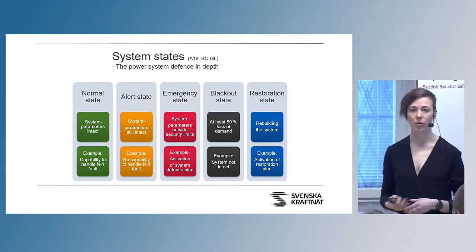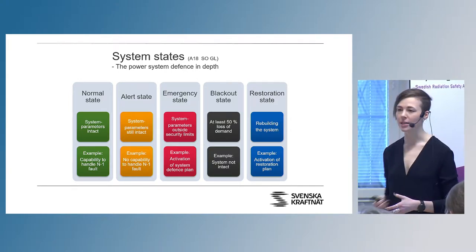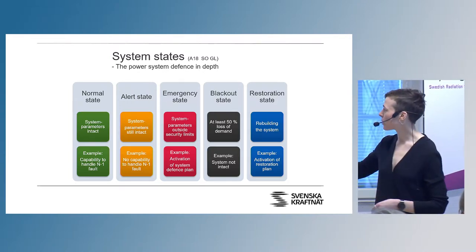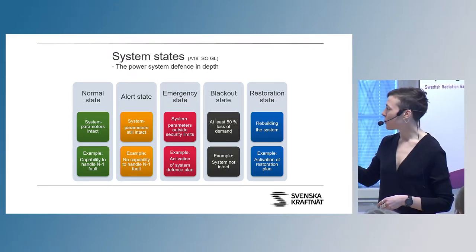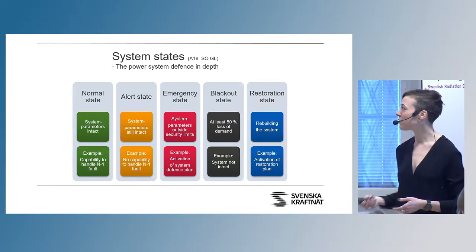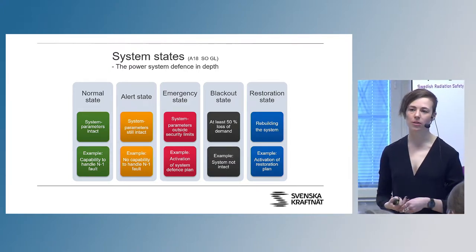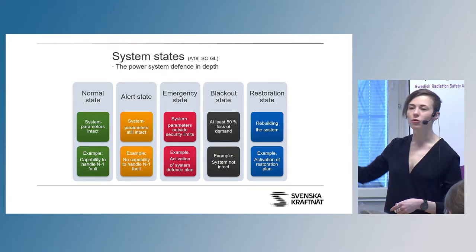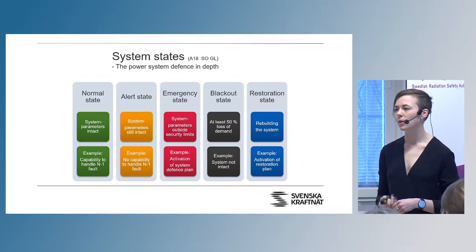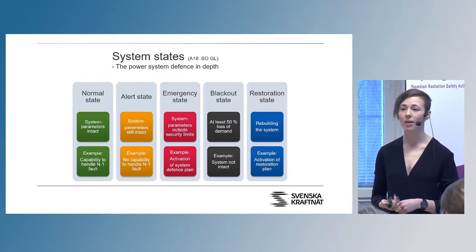How do we manage this? We use a method called defense in depth, which the nuclear power industry knows very well. It's a state-based approach: you have the normal state, alert state, emergency state, and a system defense plan. If all three layers of defense in depth fail, we have a plan to restore and take it back to normal state. System challenges with less margin will make us move faster between those system states.